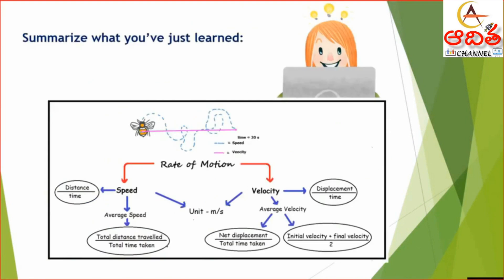To summarize: the rate of motion is speed or velocity. Speed along with direction gives velocity. Speed is calculated as distance divided by time; velocity is displacement divided by time. For average speed: total distance divided by total time taken. For average velocity: net displacement divided by total time taken, or initial velocity plus final velocity divided by 2. The unit of all is meter per second.